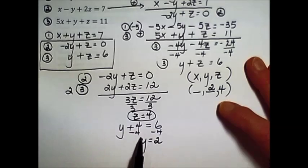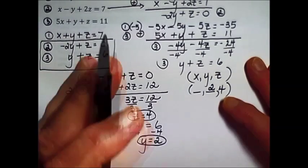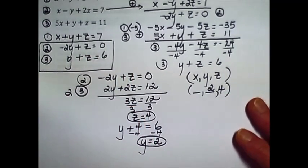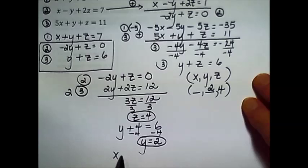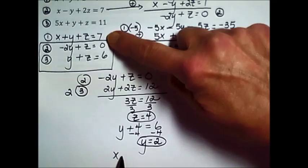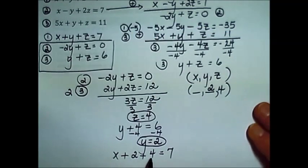Once we know two variables, we can plug it into any one of the three original equations. I like the looks of that first equation. To solve for x, I'm going to use equation number one, x plus y, which we found to be two, plus z, which we found to be four, is equal to seven. Simplifying on the left by adding like terms together, we get x plus six equals seven. Subtract six from each side, x is equal to one.